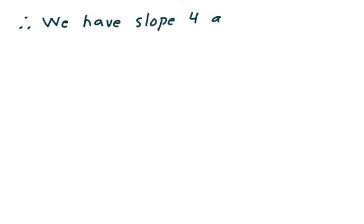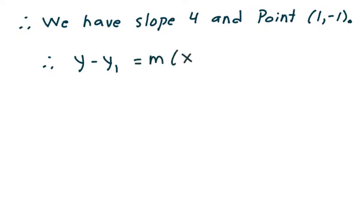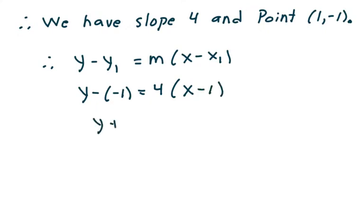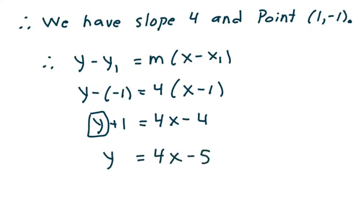So we have slope 4 and point (1, negative 1). Using point-slope form, y minus negative 1 equals 4 times x minus 1, so y plus 1 equals 4x minus 4. Solving for y, we subtract 1 from both sides to get y equals 4x minus 5. That is the equation of the tangent line.